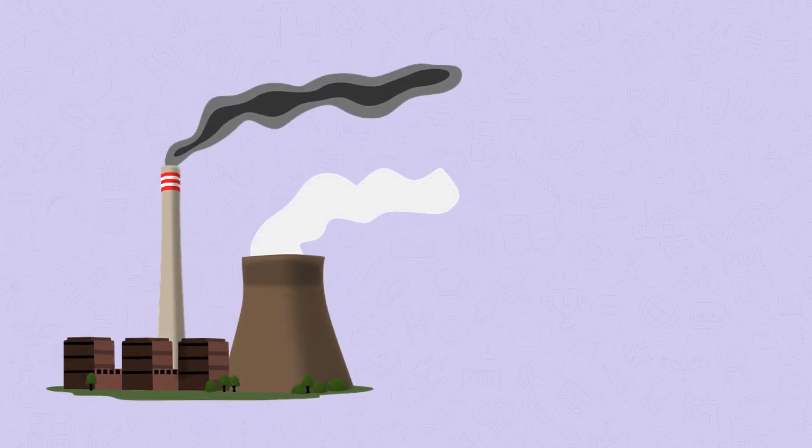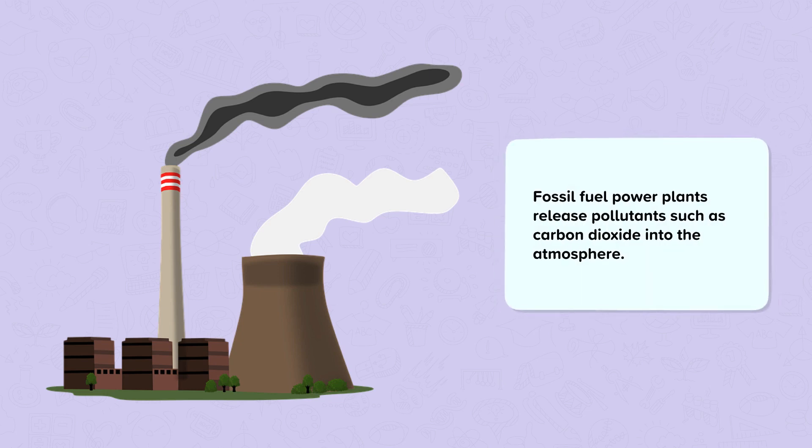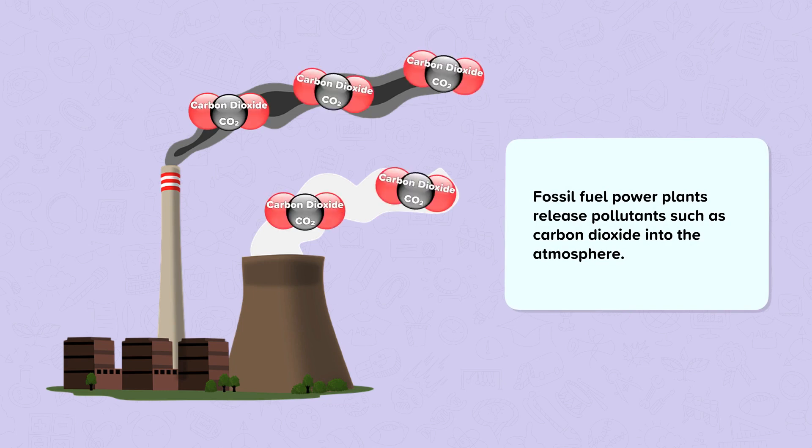This nugget is about global warming, what it is and what it is caused by. In previous nuggets we've looked at power stations, so we know that fossil fuel power plants release pollutants such as carbon dioxide into the atmosphere. Carbon dioxide is harmful to the environment because it is a greenhouse gas.